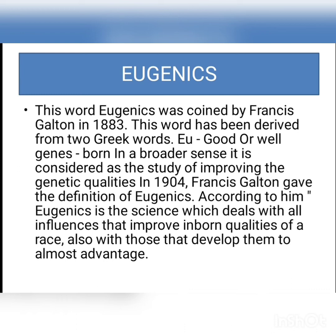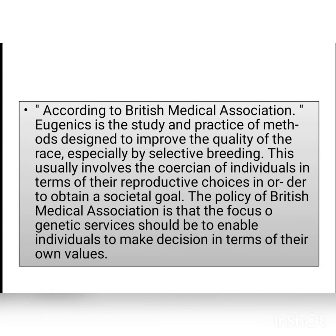Since the term eugenics was coined in 1883 by Francis Galton, it means to improve the quality of genes by modifying genetic traits through chromosomes which are inherited. In 1904, Galton defined eugenics as a science which works with efforts to improve the offspring of nature, to go to more and more advantages, generally improving society, improving individual reproductive function. The British Medical Association focused on improving genetic services and making individuals decide for themselves.